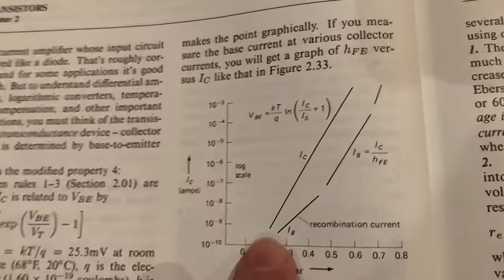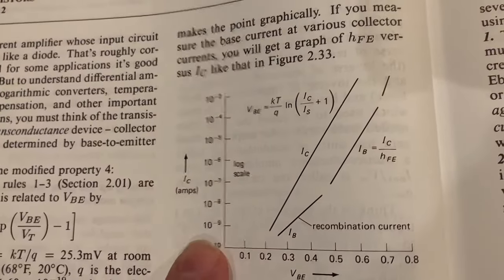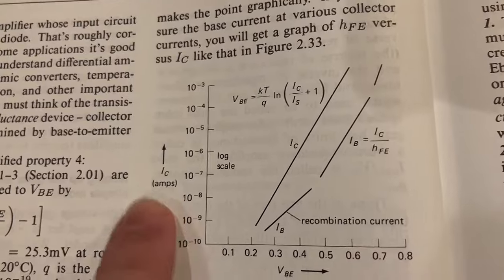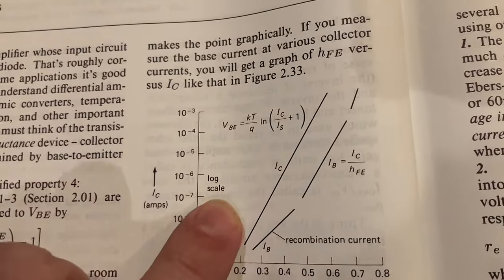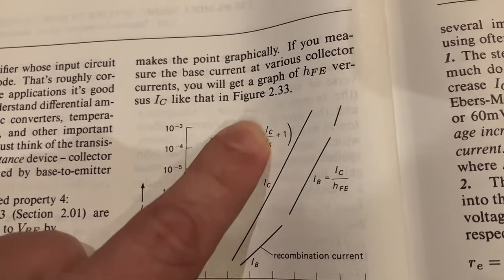All right. So let's look at this graph here. So the vertical axis here is on a logarithmic scale. So here we have the base emitter voltage, here we have the collector current. And look at what a gloriously linear line this is. See how nice that line is.